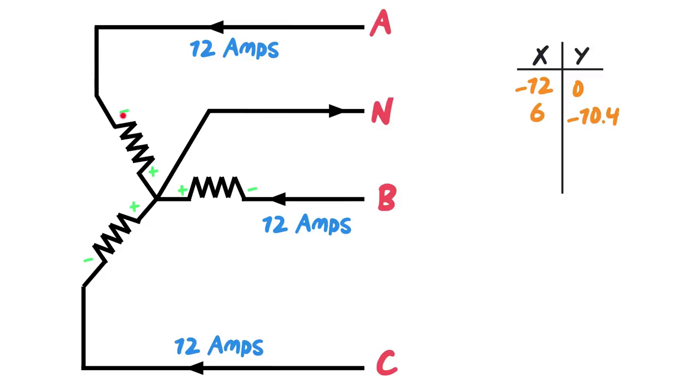Negative 12, because that starts at the negative and ends up positive there, negative 12 times the sine of 120 gives me negative 10.4. Again, 120 degrees out of phase with each other. So that's why I'm using 120 degrees.